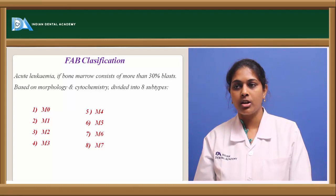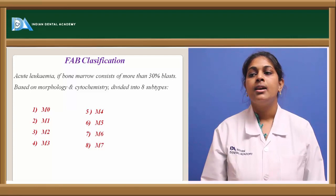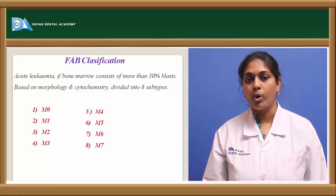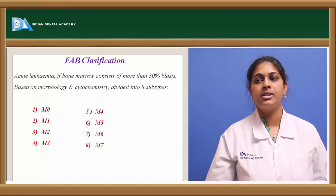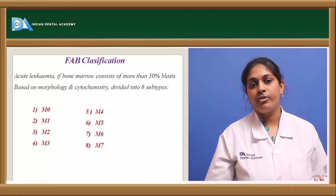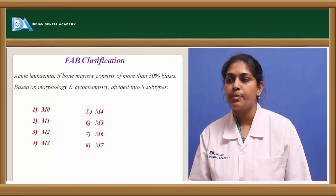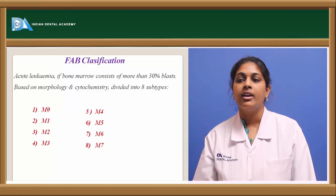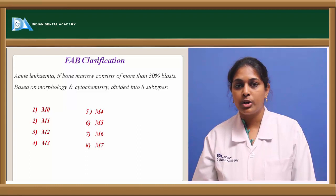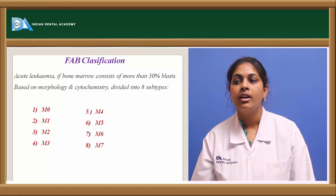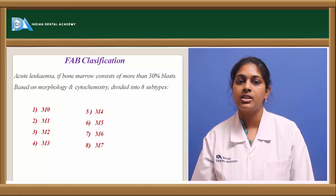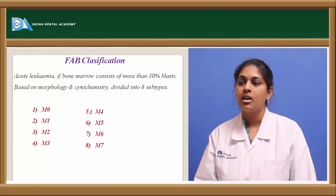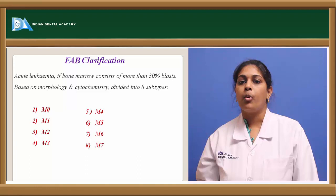M4 is acute myelomonocytic leukemia, constituting 30% of all AMLs, characterized by mature cells of both the myeloid and monocytic series in the peripheral blood. These myeloid cells resemble those in M2 AML. Myeloperoxidase staining gives a plus 2 grade, and it also stains positive for nonspecific esterase at a plus 1 grade. M5 is acute monocytic leukemia, constituting 10% of all cases, with two subtypes: M5A showing poorly differentiated monoblasts, and M5B showing differentiated promonocytes and monocytes. M5 stains positive only for nonspecific esterase at plus 1.